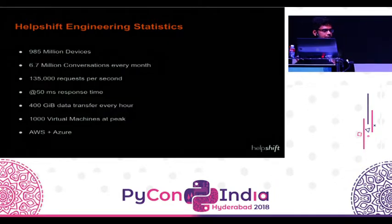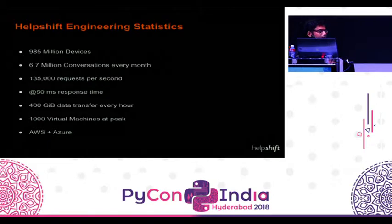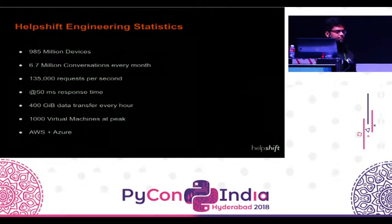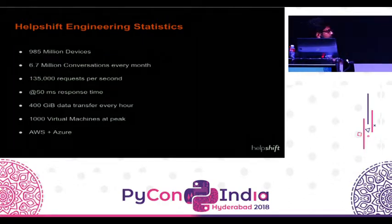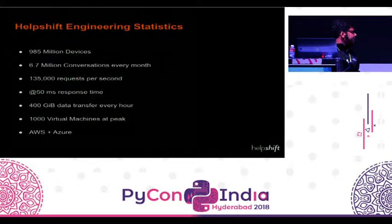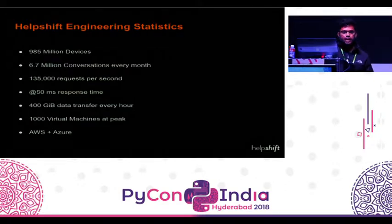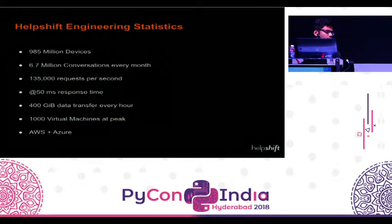To give you an idea of the scale HelpShift engineers work at: we are installed on nearly one billion devices across the world, 6.7 million conversations happen every month, 135,000 requests per second, 50 milliseconds response time, around 400 GB data transfer every hour, and at peak, nearly 1,000 virtual machines are running just to support the backend system. The platform runs on AWS plus Azure.